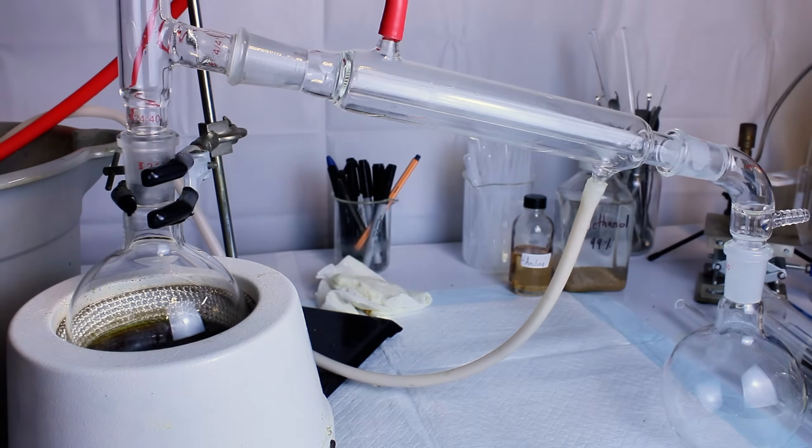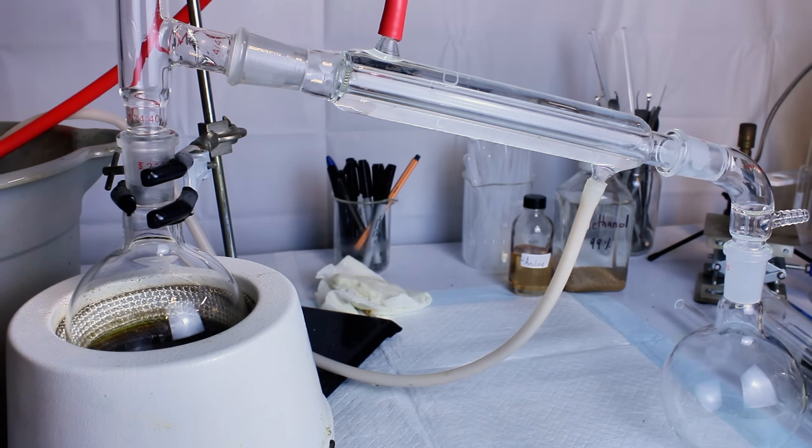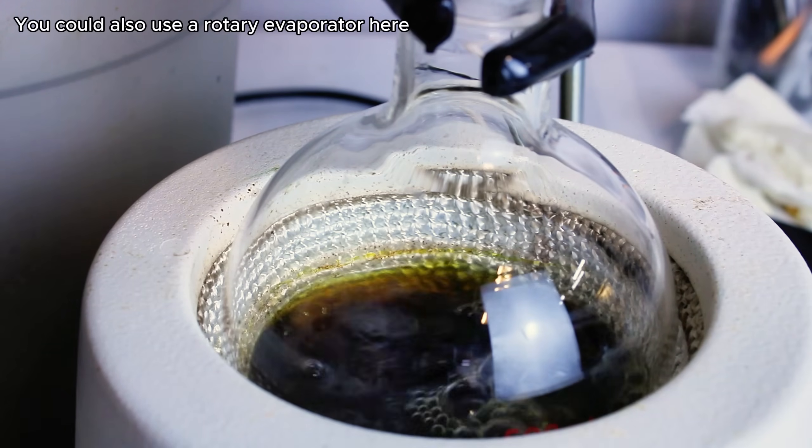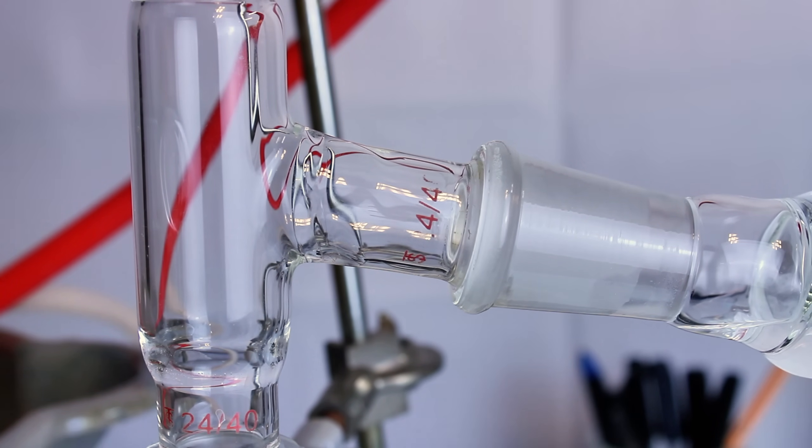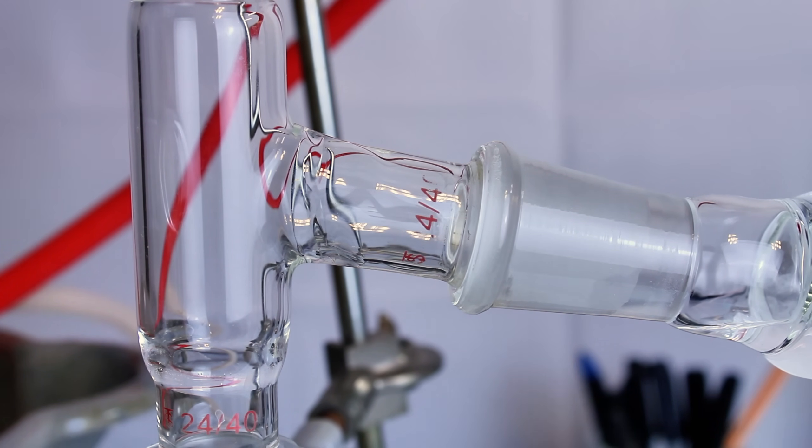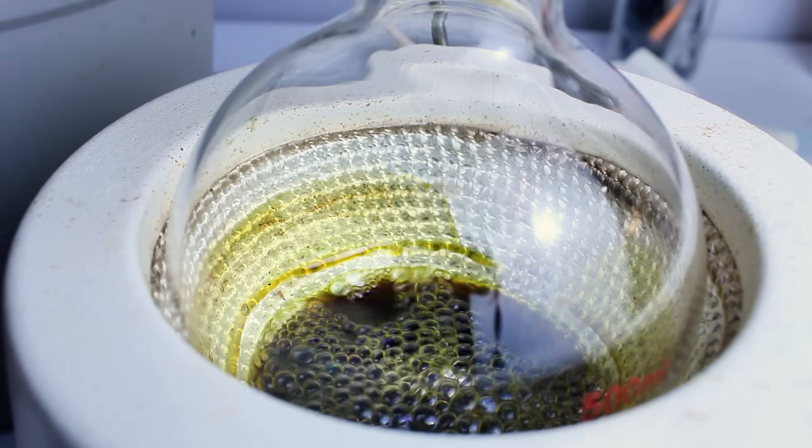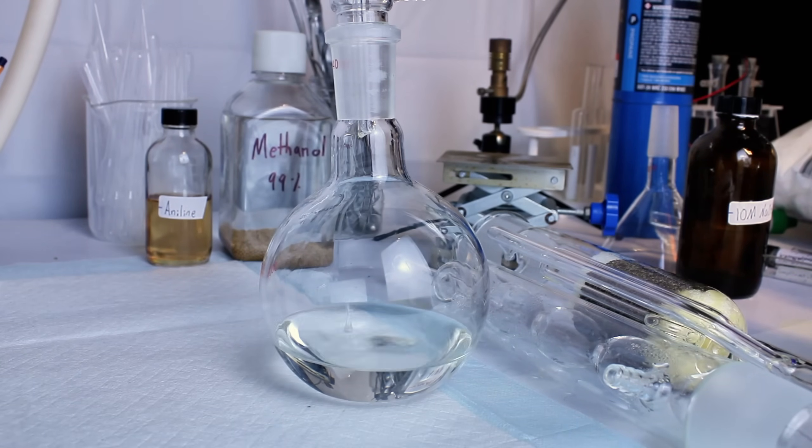I then set this up for a standard distillation to boil away as much of the excess isopropyl from my extract as possible. This is something you might typically do with a rotary evaporator if you are extremely wealthy and happen to have one, and it's also typically something you'd only do with an expensive solvent, not typically isopropyl. Once I collected about 100 milliliters of isopropyl, I cut the heating and set my flask aside to cool.